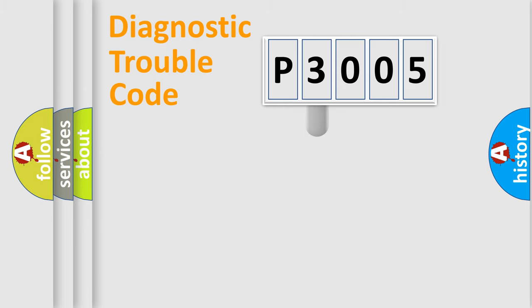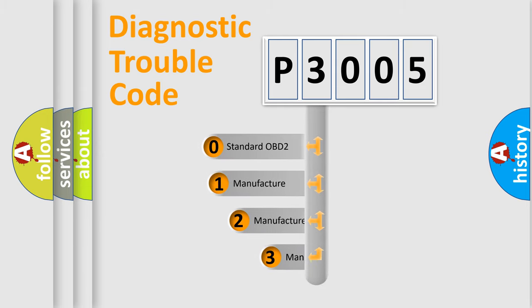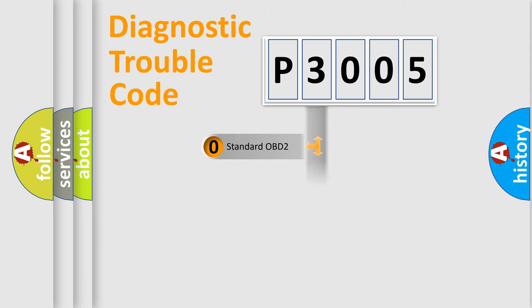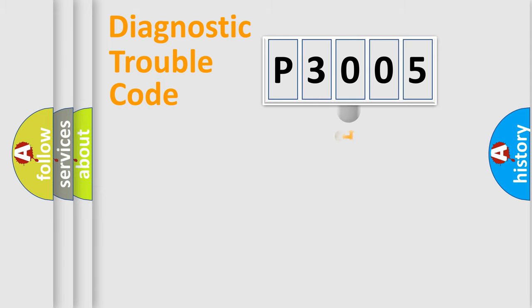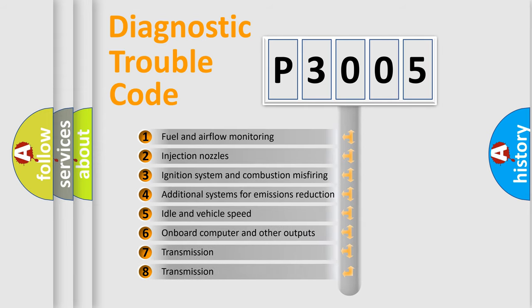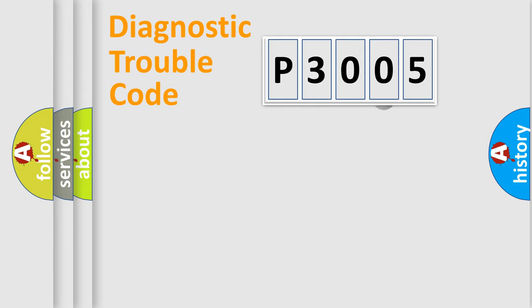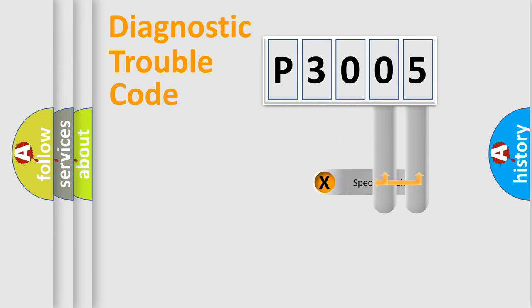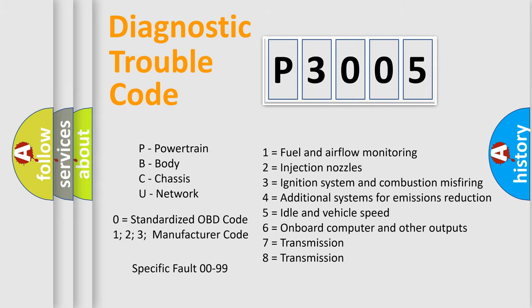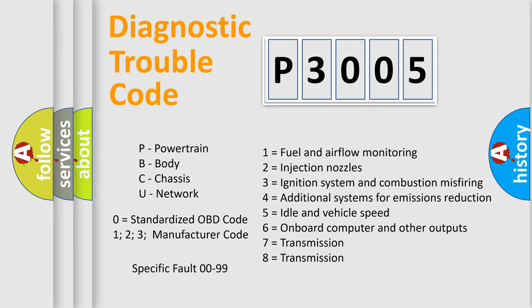This distribution is defined in the first character of the code. If the second character is expressed as zero, it is a standardized error. In the case of numbers 1, 2, or 3, it is a more specific expression of a car-specific error. The third character specifies a subset of errors. This distribution is valid only for the standardized DTC code, and only the last two characters define the specific fault of the group.